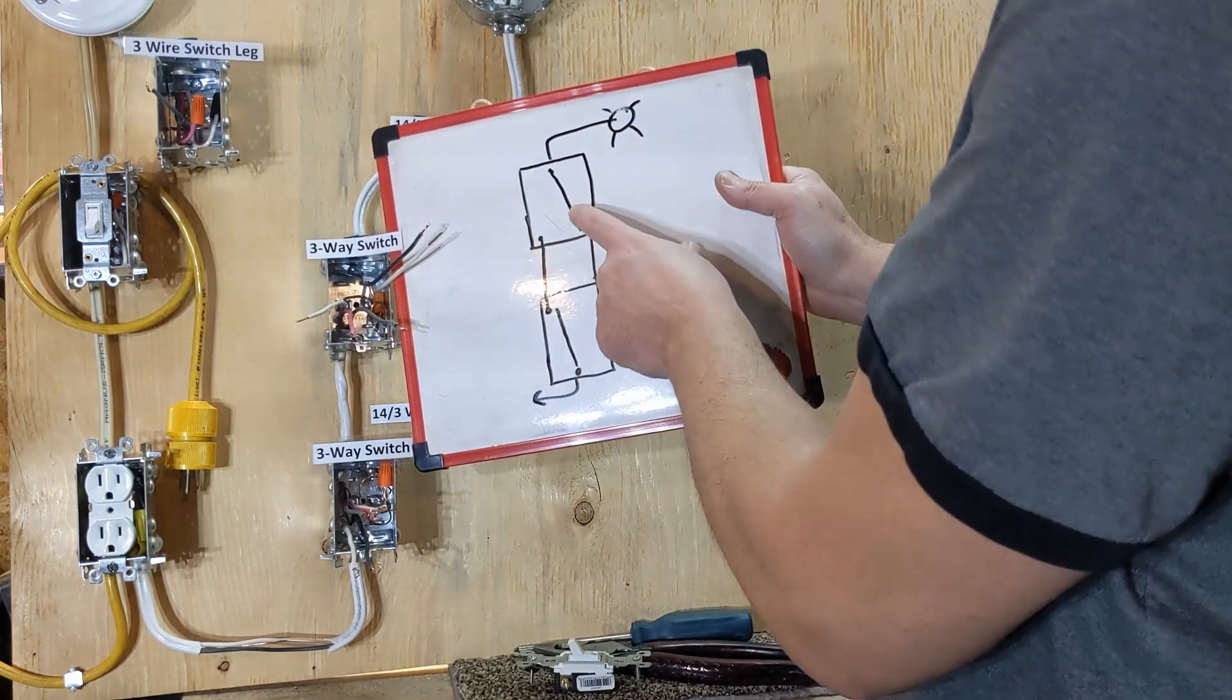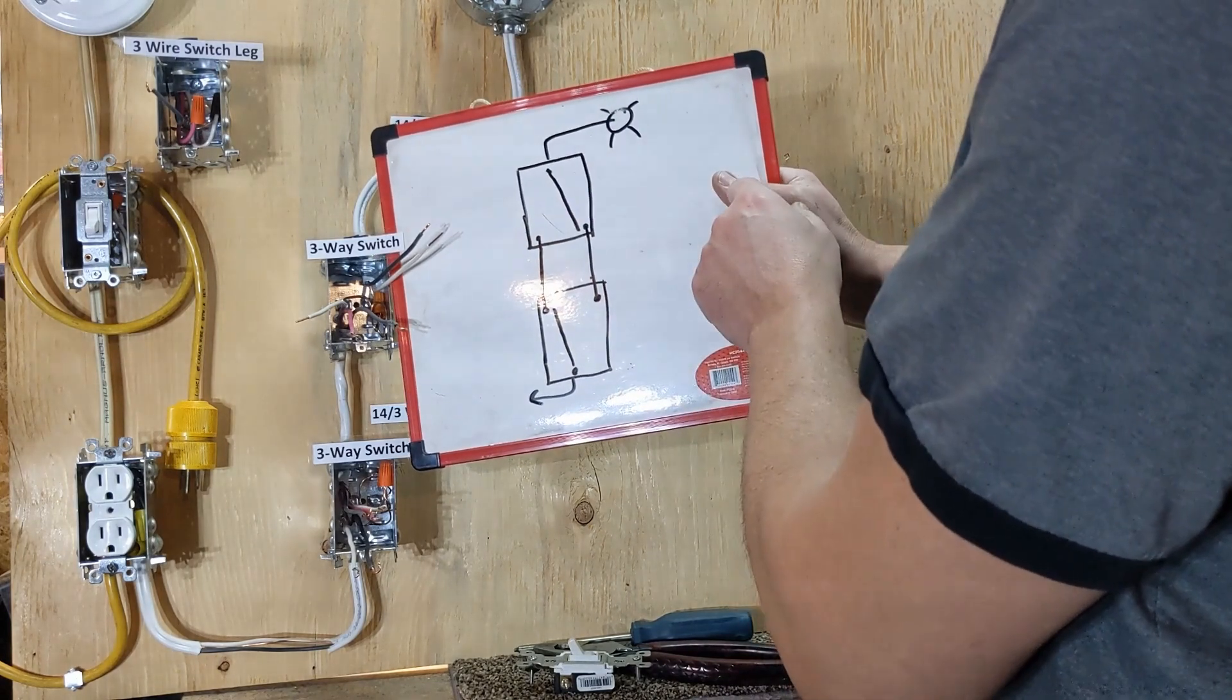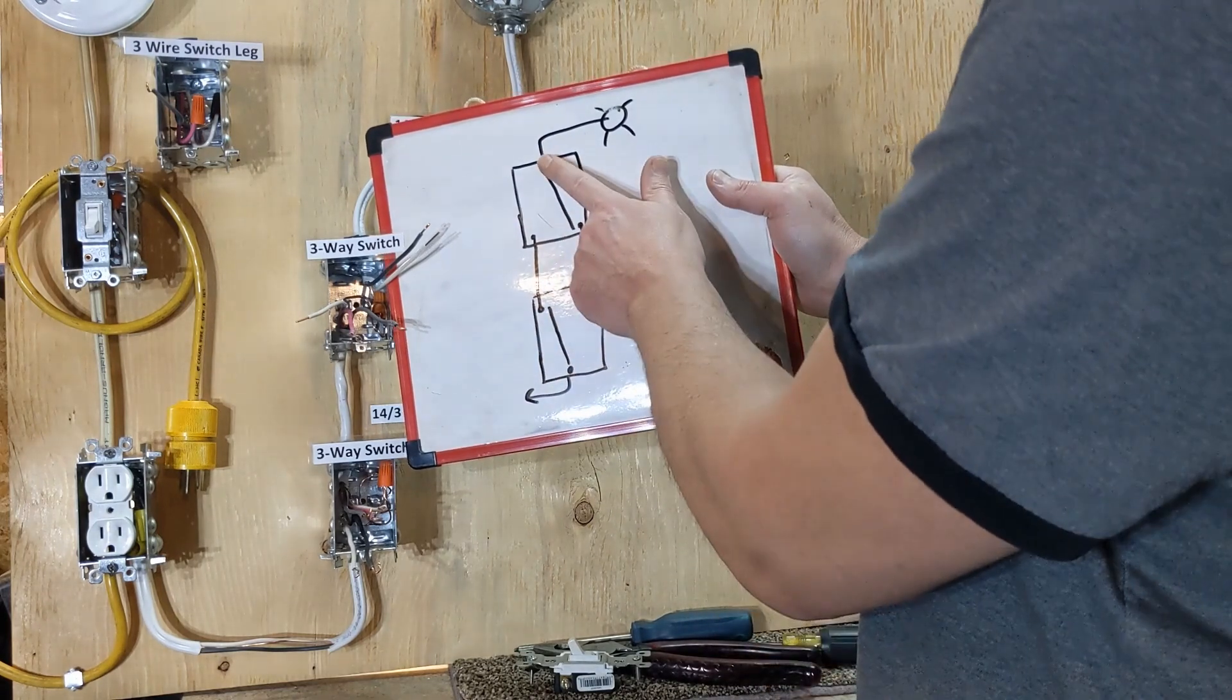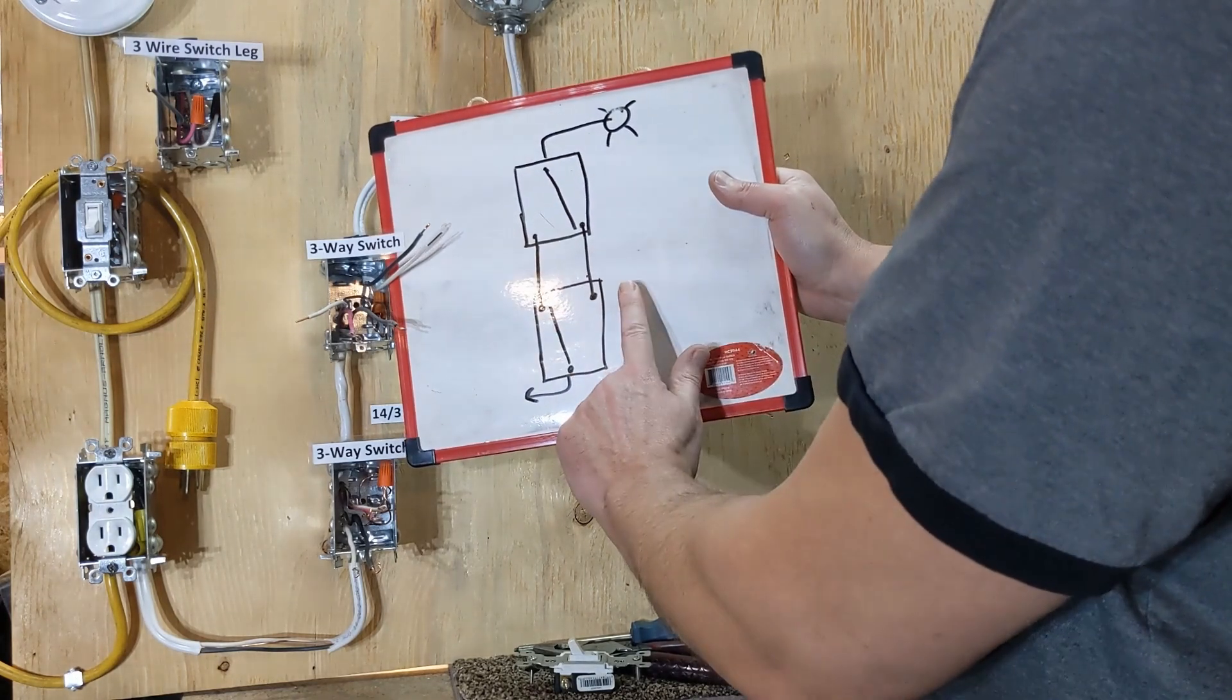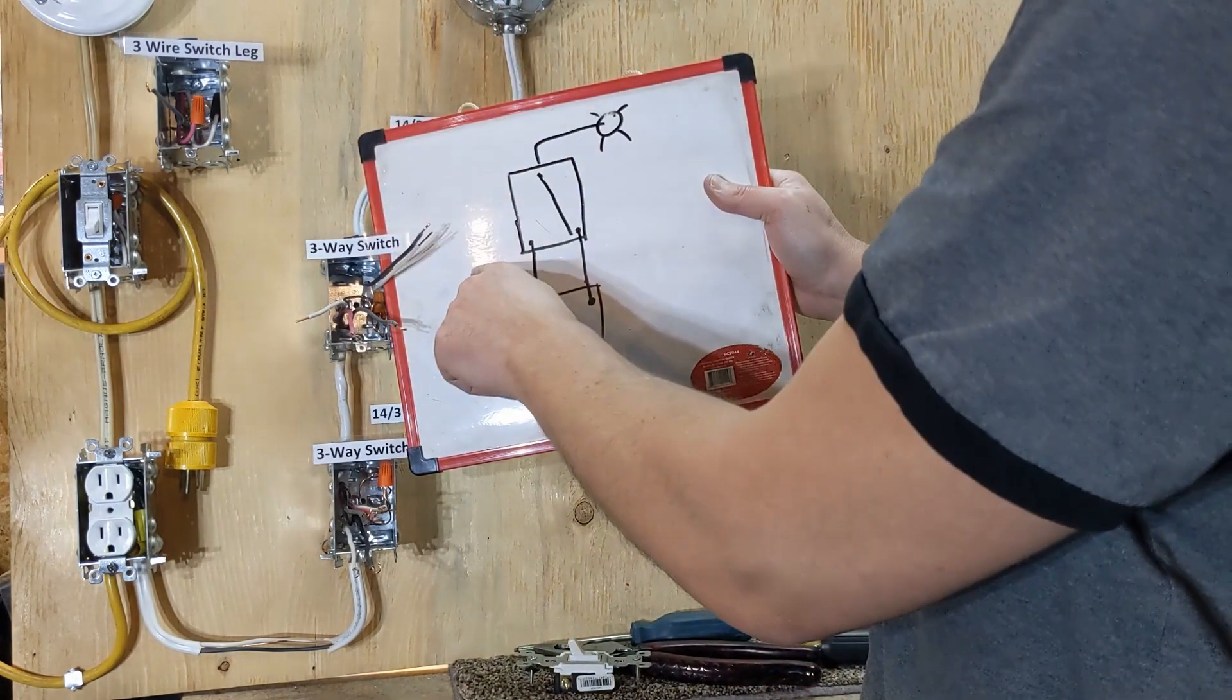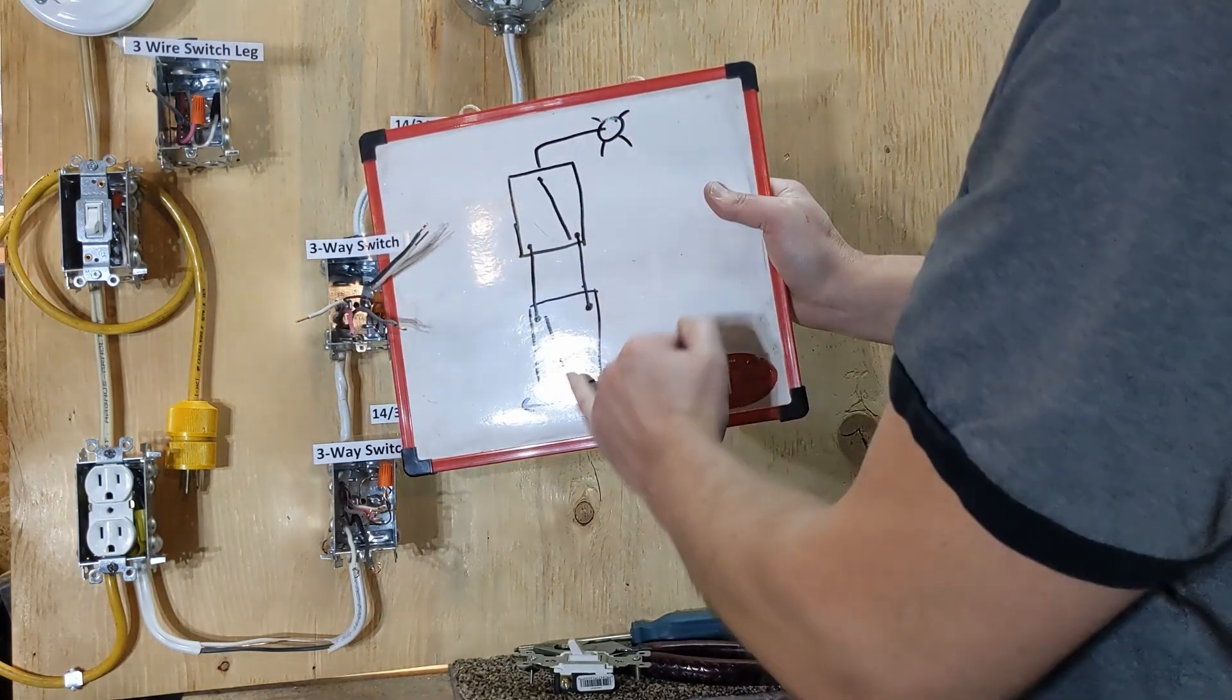On the other side, your three-way is going to be switching back and forth between the travelers. So if this switch is in this position and this one's in this position, that would turn it on off, on off. And this one would be on off, on off. So you can see how that circuit would go.